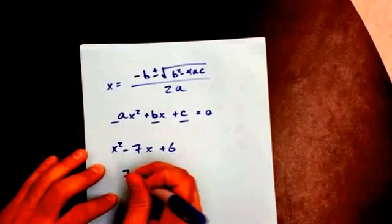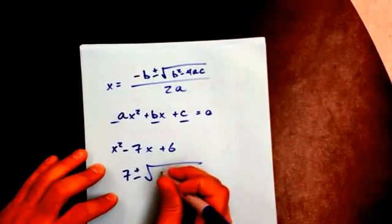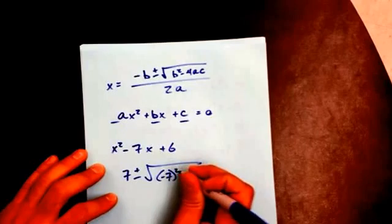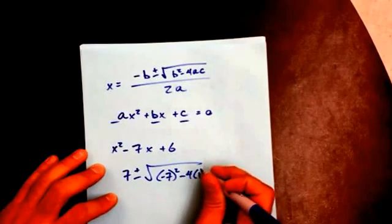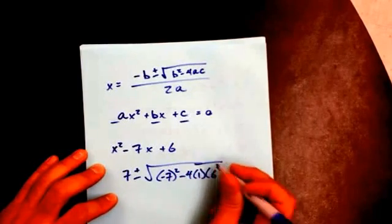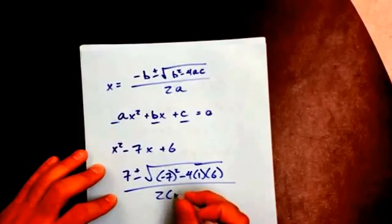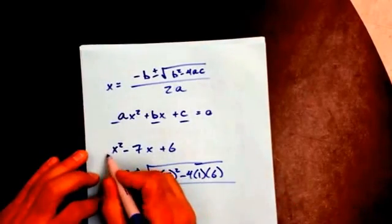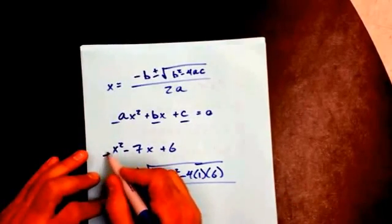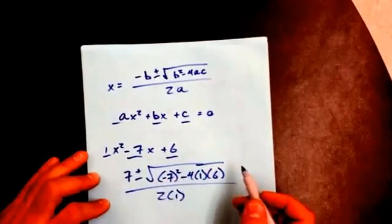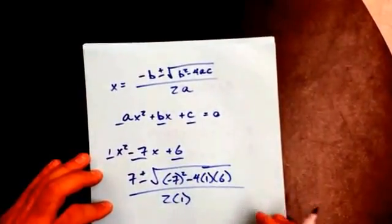So negative negative 7 is 7 plus or minus the square root of negative 7 squared minus 4 times 1 times 6 over 2 times 1. Okay, so remember a right here, there's nothing there, so it's a 1, b is negative 7, and c is 6. So that's where I'm getting all of the numbers.